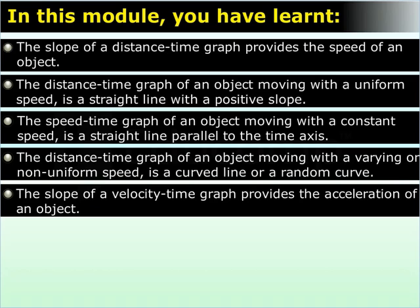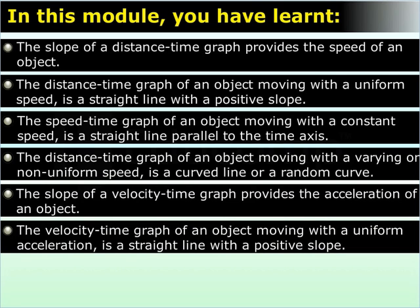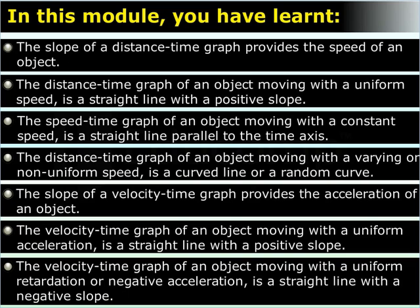The slope of a velocity-time graph provides the acceleration of an object. The velocity-time graph of an object moving with a uniform acceleration is a straight line with a positive slope. The velocity-time graph of an object moving with a uniform retardation or negative acceleration is a straight line with a negative slope.